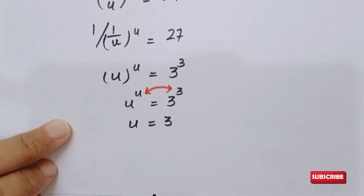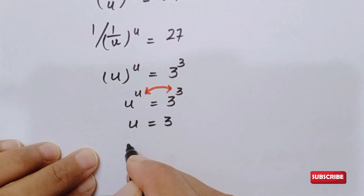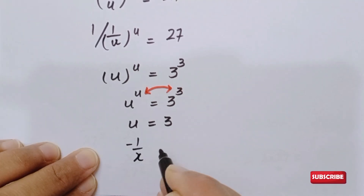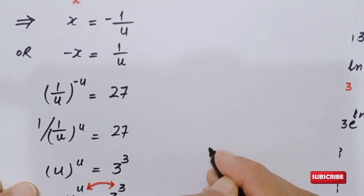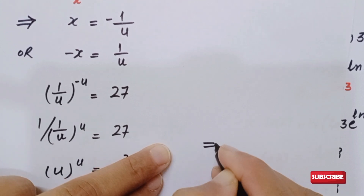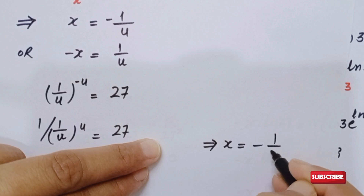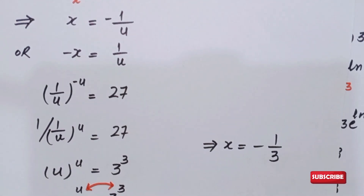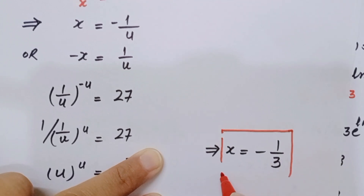We know that u equals minus 1 over x. Plugging in u equals 3: minus 1 over x equals 3, so x equals minus 1 over 3. This is the same value we calculated using Method 1. It is the answer to our question.